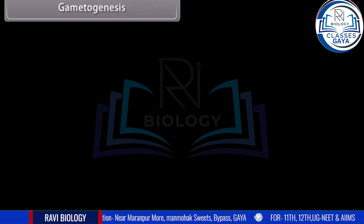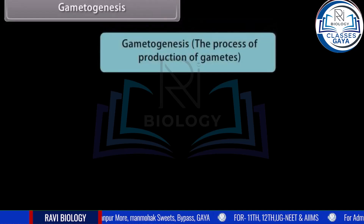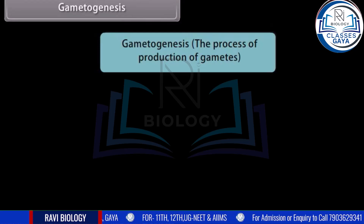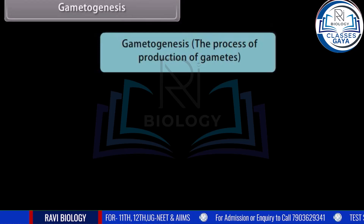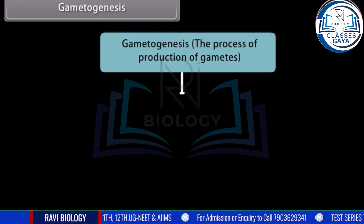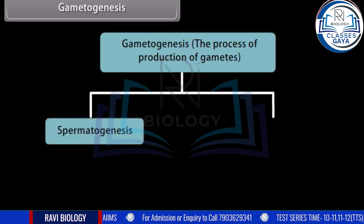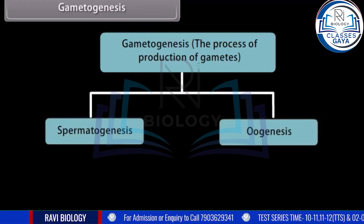Gametogenesis is the process of production of gametes. Males and females of a species have different forms of gametogenesis: spermatogenesis in males and oogenesis in females.